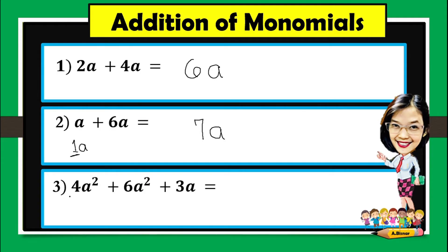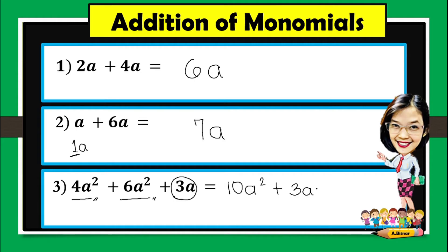For number 3, 4a squared plus 6a squared plus 3a. You have to remember that you only have to add similar terms or like terms. In here, the similar terms are 4a squared and 6a squared. So when we add them, this is 10a squared. Now what to do with 3a? Just simply copy this. So the final answer will be 10a squared plus 3a.